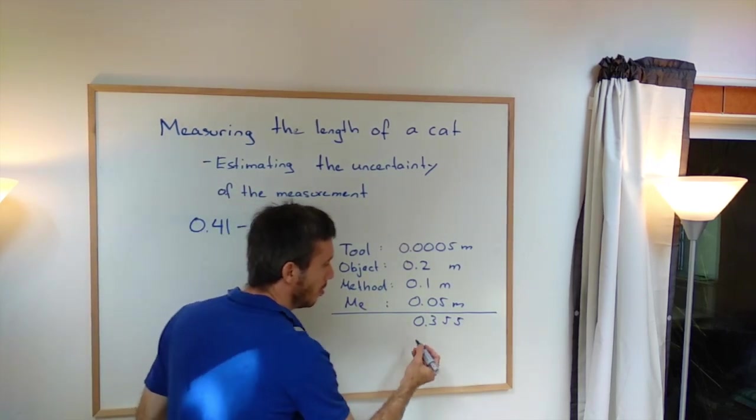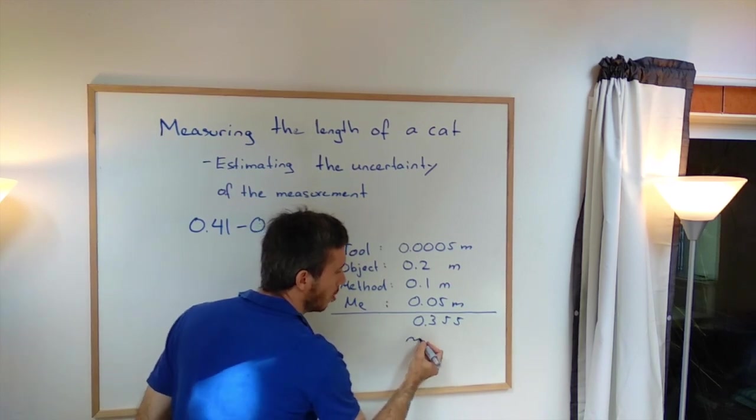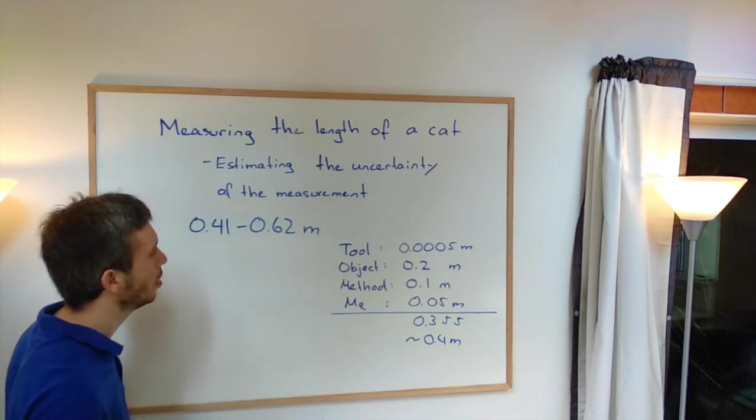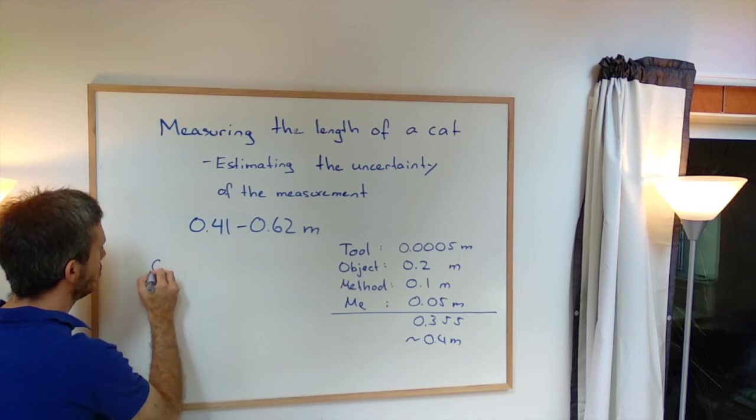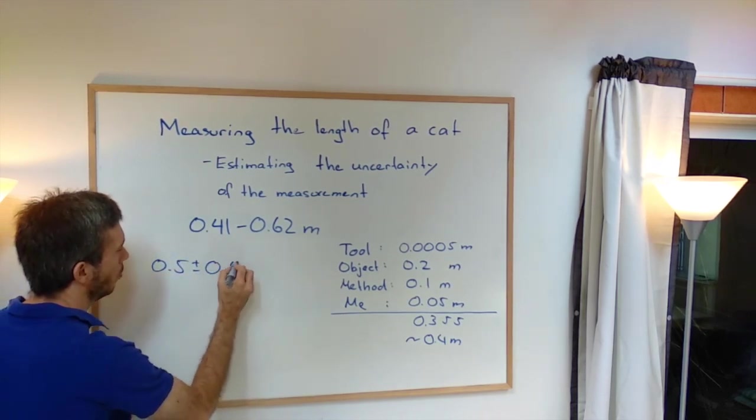Now, if I'm already having, this is an estimation, so let's not pretend the precision that we don't really have. So I'm going to round this to 0.4 meters of uncertainty. So what do I report as the final answer? Well, I'm going to take a value in between.